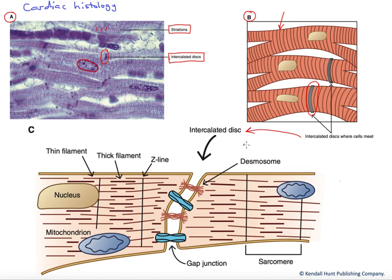we can now see the presence of the specialized cell-cell junctional proteins forming desmosomes and, at the bottom here, identified gap junctions. These two cell-cell junction types together help form what's termed a functional syncytia.